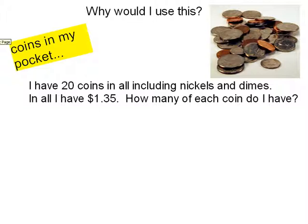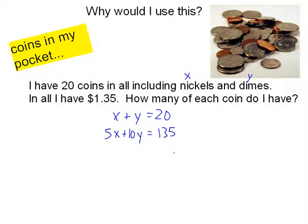When would you use this? Here's an example: I've got coins in my pocket — 20 coins in all, including nickels and dimes. I'll label X for nickels and Y for dimes. In all I have a dollar 35. I have 20 coins in all, so X plus Y equals 20. For the dollar amount, nickels are 5 cents apiece and dimes are 10 cents apiece, so 5X plus 10Y equals 135 — I'm leaving the decimal out of both sides.